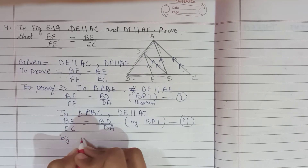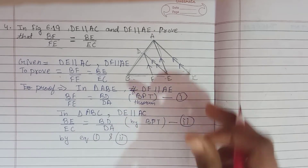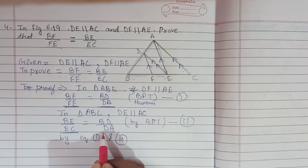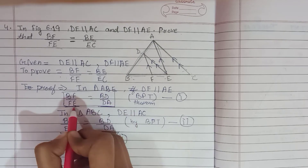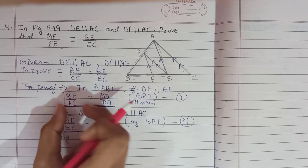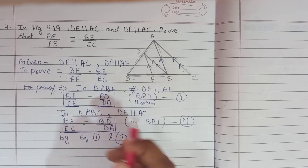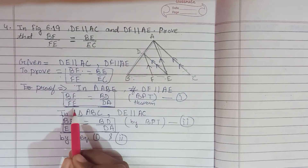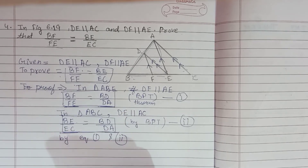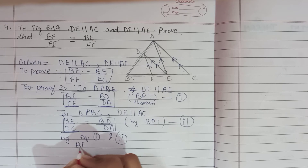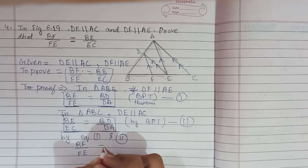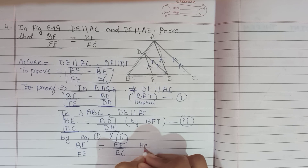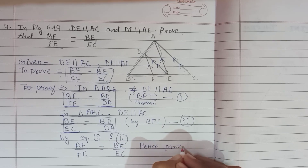By equations 1 and 2, BF by FE equals BD by DA and BE by EC also equals BD by DA. Therefore BF by FE is equal to BE by EC. Hence proved. Thank you.